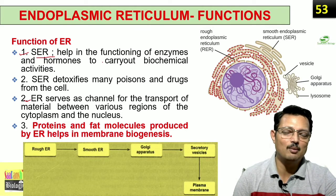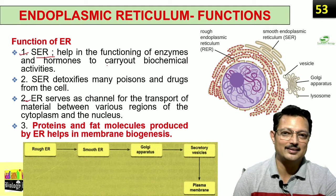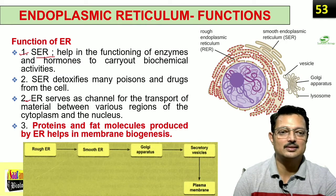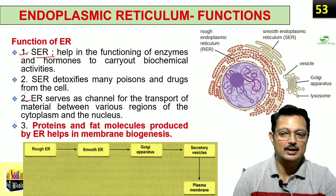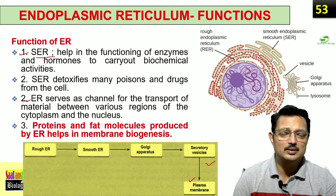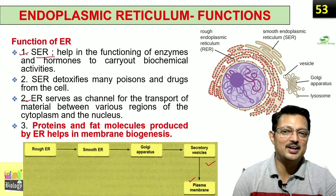RER forms protein and SER forms lipid. Since the plasma membrane is made up of a phospholipid bilayer, the lipid and protein formed from the endoplasmic reticulum are actively involved in the formation of the plasma membrane. This helps in formation of membrane and is therefore called membrane biogenesis. The components from RER and SER are sent to the Golgi, which forms secretory vesicles that ultimately fuse to form the plasma membrane. That is why the endoplasmic reticulum is a very important organelle — you can call it a roadway, a network of the cell.